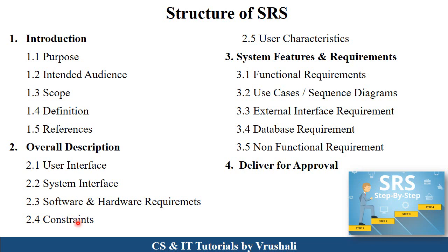The next item is constraints, which are conditions. For example, students cannot edit their attendance or marks, and a password can only be entered three times during login before an error is displayed. Next is user characteristics — for example, teachers can mark attendance and set question papers through the application, while students can only submit answers and cannot edit the question paper. The project is developed as per these user features.